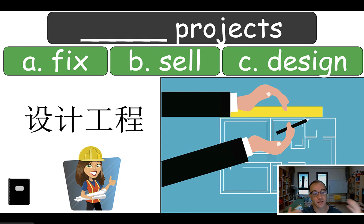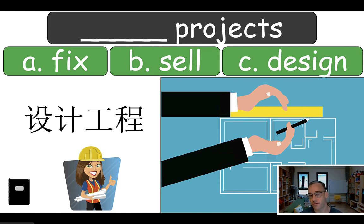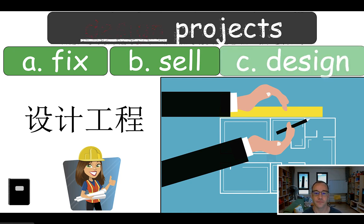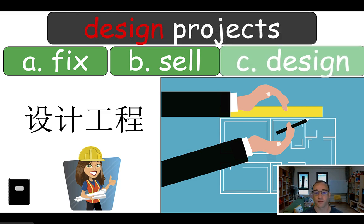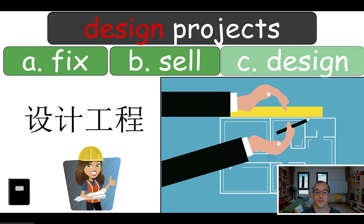Then move on to the next one. 'What's this? She's an engineer. What does she do — does she fix projects, sell projects, or design projects?' Same drill — one student from each team, then reveal. Obviously it's 'design projects.' Have them write it down, have them say it a few times. They're going to be saying it a bunch of times during class, so while they're writing it, also say it: 'Design projects, design projects, design projects.' Okay, let's go on to the next one.